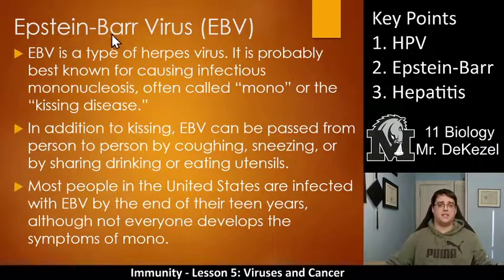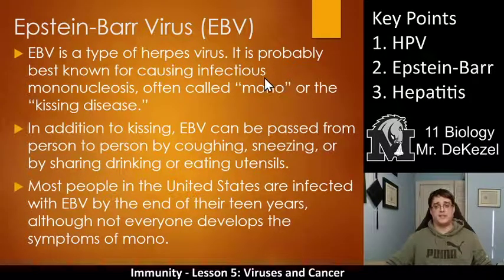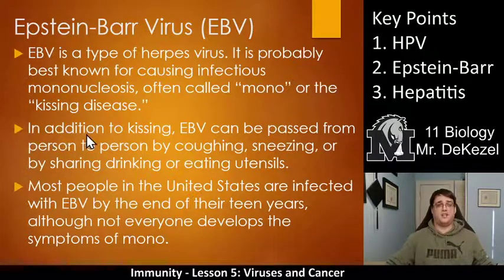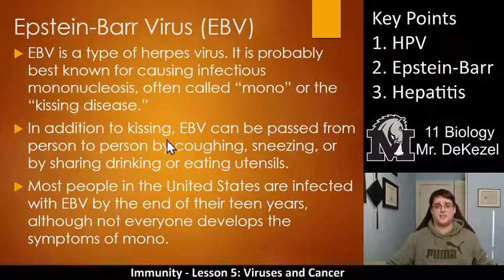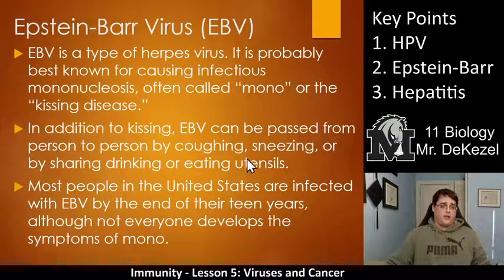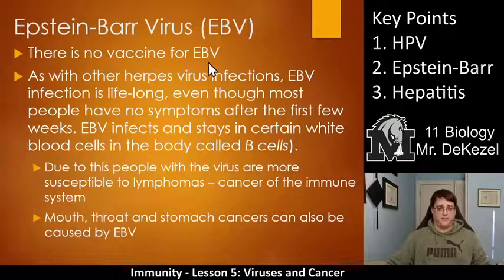Another type of virus is the Epstein-Barr virus, or EBV, which is a type of herpes virus. It is probably best known for causing the infectious disease called mononucleosis, or mono, or the kissing disease — it can be passed through kissing. In addition to kissing, EBV can be passed from person to person by coughing, sneezing, sharing a drink, eating utensils, or pretty much any bodily fluid. Most people in the United States are infected with EBV by the end of their teen years, though you might not get symptoms of mono unless you get a high dose of the virus. There is no vaccine for EBV.